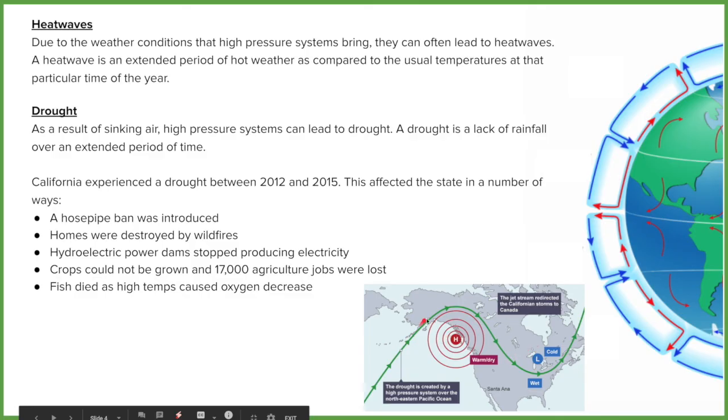When the jet stream in this case in 2012 moved slightly further north than it usually would, the high pressure that would usually be down in Mexico was forced further north. And that's brought the stable warm weather, unfamiliar for that time of year, which has caused the heat wave and drought in California. But it's also pushed what would have been the storms that California would have had at the time further east. So Canada then ended up with the storms that California would have once had.